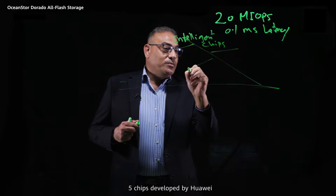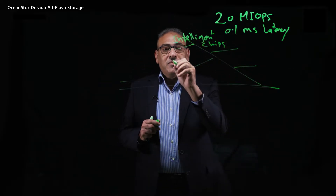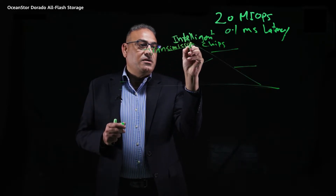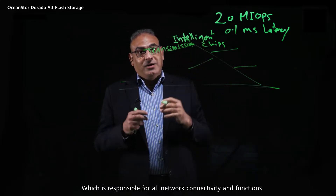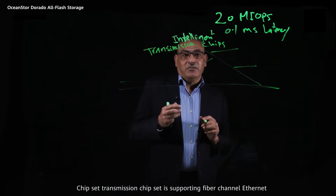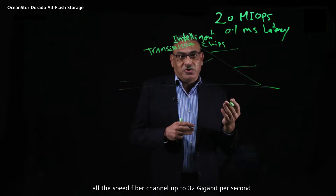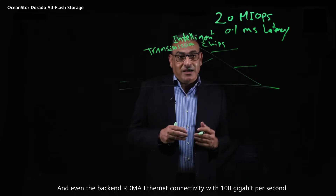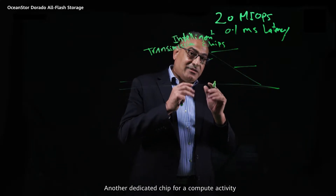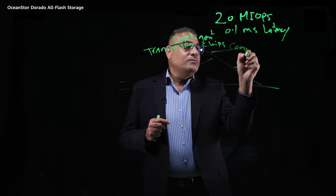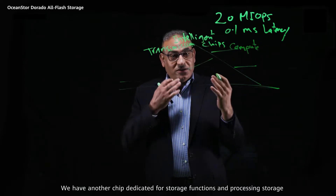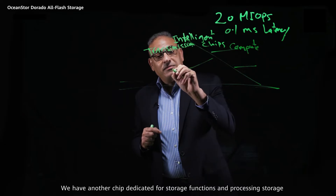Five chips developed by Huawei — our own chipset. The first one is the transmission chip, which is responsible for all network connectivity and functions. It supports Fiber Channel and Ethernet, including 32 gigabit per second Fiber Channel and back-end RDMA Ethernet connectivity at 100 gigabit per second. Another dedicated chip is the compute chip for compute activity. We also have a chip dedicated for storage functions and processing.